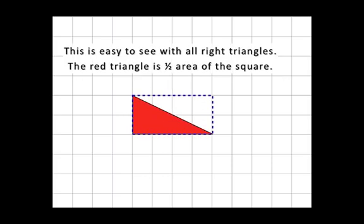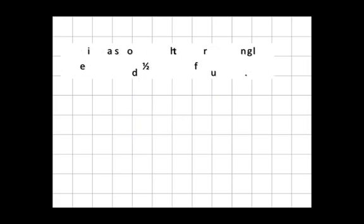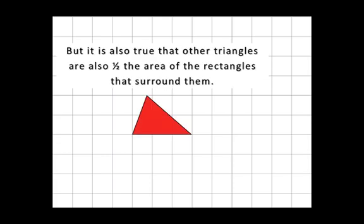This works for all right triangles, because they'll always have a rectangle that surrounds them. Just find the area of the rectangle, divide it in half, and you'll find the area of the red triangle. But it turns out that this works for all triangles, not just right triangles.